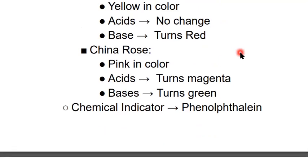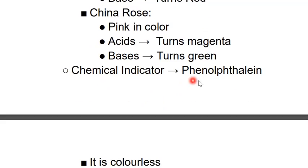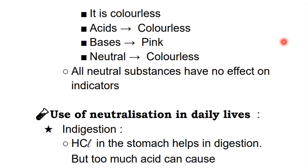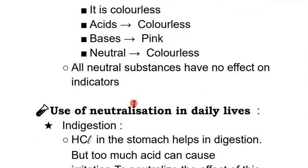China rose is a type of flower. Its petals are used to make a pink solution. With acids, china rose solution turns magenta (a dark pinkish color), and with bases it turns green. There is also a chemical indicator called phenolphthalein — it is colorless. With acids it remains colorless, with bases it turns pink, and with neutral substances it stays colorless. Neutral substances have no effect on indicators.